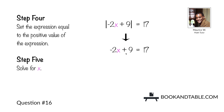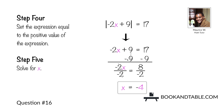Find the second answer by setting the expression equal to the positive value, positive 17. Subtract 9 from both sides to remove the constant, giving us negative 2x is equal to 17 minus 9, which is 8. Divide both sides by negative 2, giving x is equal to 8 divided by negative 2, which is negative 4.